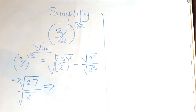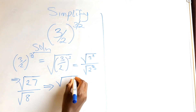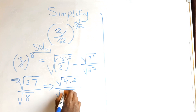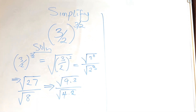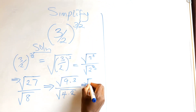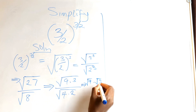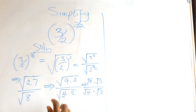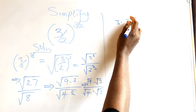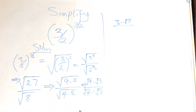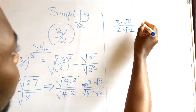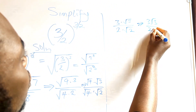We can break it further. 27 is also the same thing as 9 times 3, and 8 is the same thing as 4 times 2. So this is the same thing as square root of 9 times square root of 3, all over square root of 4 times square root of 2. Square root of 9 is 3, times square root of 3, all over square root of 4 is 2, times square root of 2. Which is exactly 3 root 3 over 2 root 2.